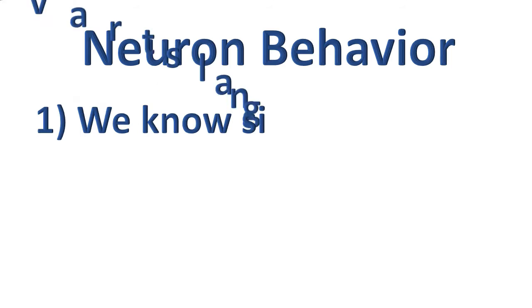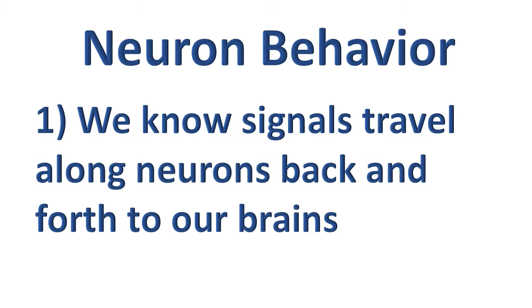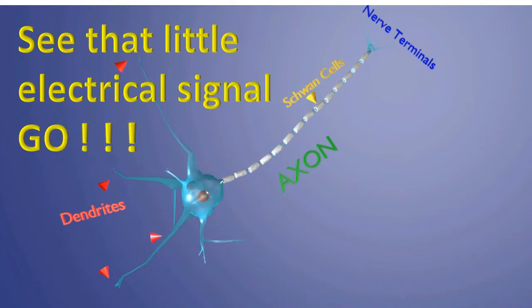The first key point concerning neuron behavior may seem like common sense, but it's important. We know for a fact that signals travel along neural pathways back and forth to our brains. Which brings us to one of the basic components of those pathways. Here's an image of a neuron with a simulated electrical signal moving through the neuron. These signals move at roughly 200 miles per hour.